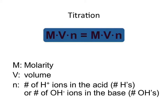Knowing our standard allows us to figure out the unknown concentration. We utilize this equation: M × V × N, where M stands for molarity, V is volume, and N is the number of H+ ions in the acid or the number of hydroxide ions in the base. For example, HCl has one proton to donate, so N equals 1. For Ba(OH)2, barium hydroxide, it has two OH− ions, so N equals 2.